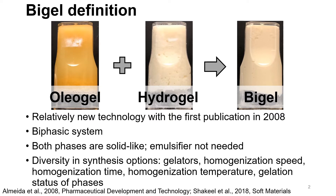A bi-gel has great diversity in how it can be synthesized. Because you have two phases, you can use a wide array of different gelators. You can modify your homogenization speed, your homogenization time, the temperature at which you homogenize the phases, as well as the gelation status of your phases. Both phases can be already gelled when you homogenize, or they can be un-gelled, or you can have one that's gelled and one that's un-gelled.